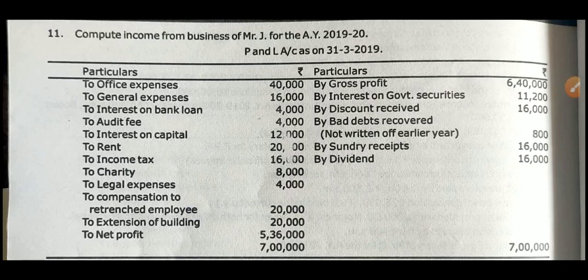So here is the question. Let me explain the question first. Compute income from business of Mr. J for the assessment year 2019-20. Profit and loss account as on 31st March 2019. No adjustments are given for this question — only the profit and loss account is given, in which you need to compute the taxable income from business of Mr. J.